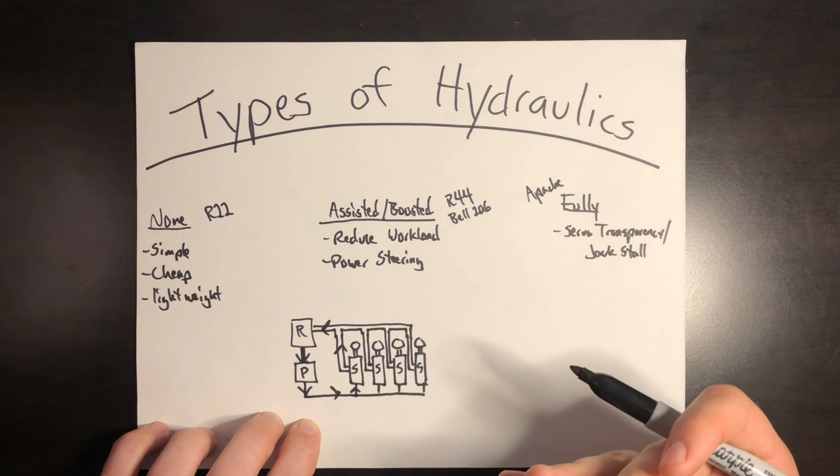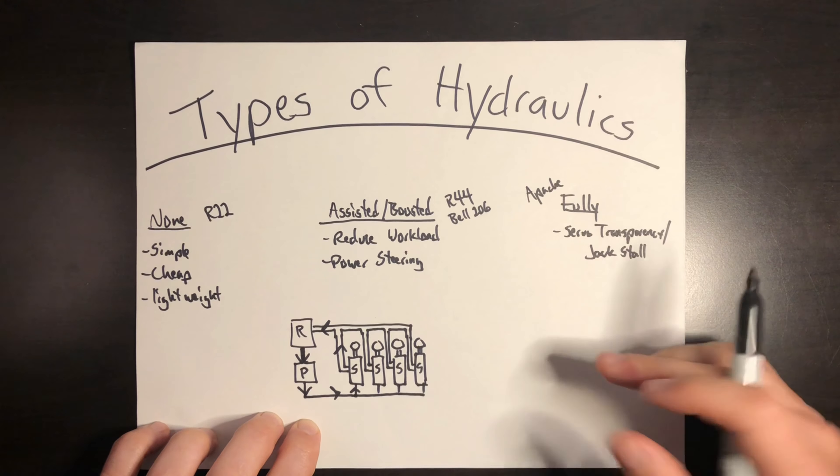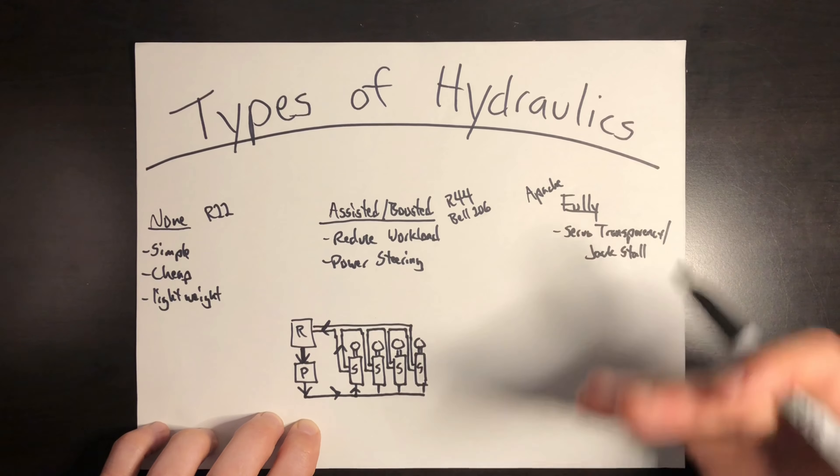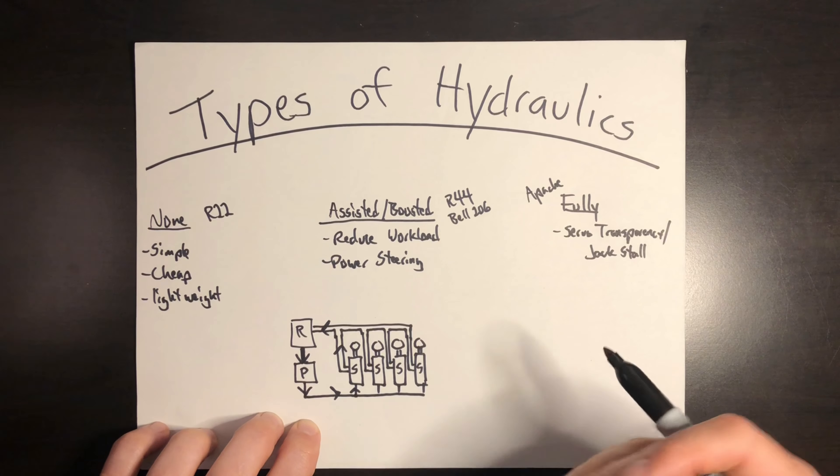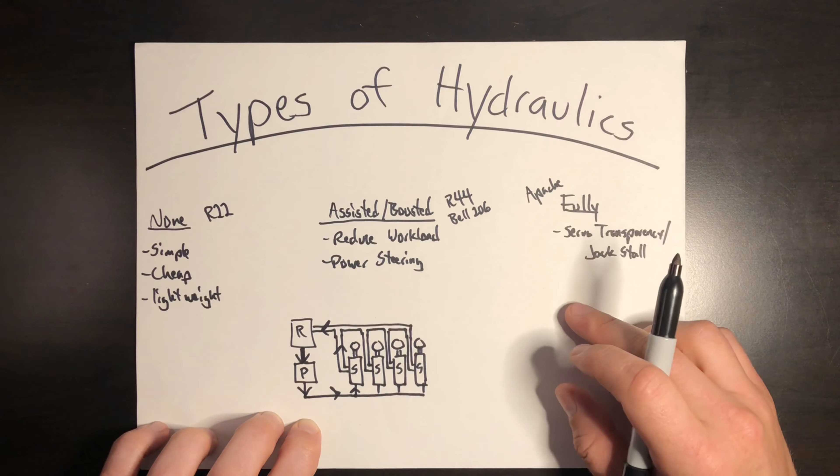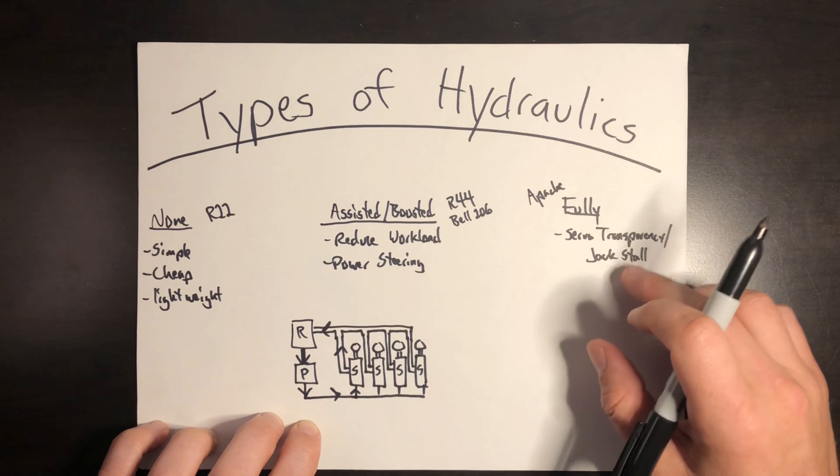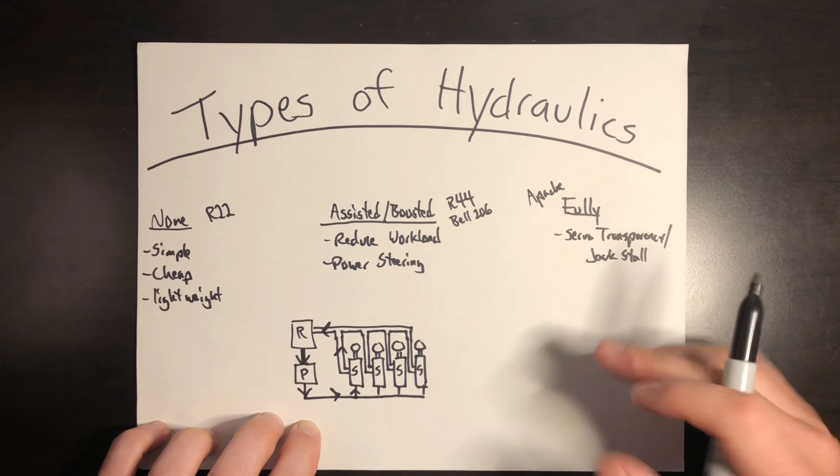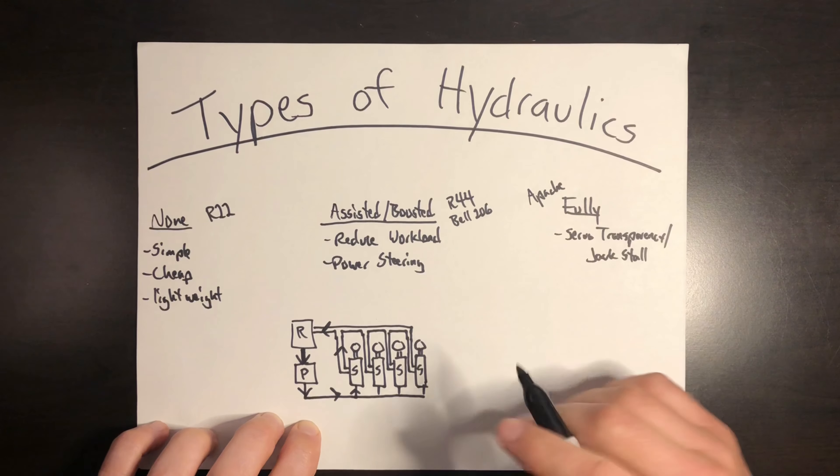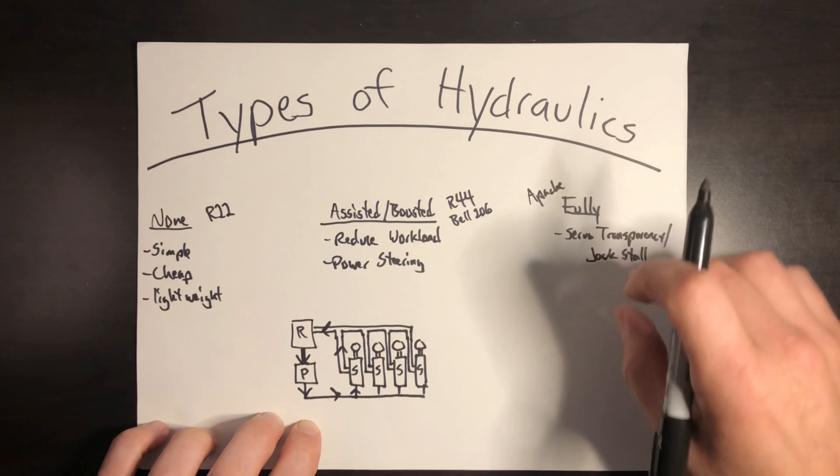So what was going on is the helicopter would aggressively maneuver or g-load too much too fast in this boosted system, and the system just could not keep up. The hydraulics could not flow fast enough through the system, and so what happened is the flight controls would seize up in like a jamming or a binding feel, and the helicopter would therefore just crash before the hydraulics could catch up in the system.